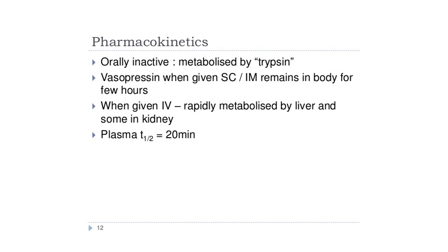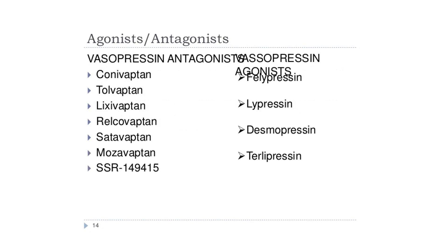Regarding pharmacokinetics: vasopressin is orally inactive and metabolized mainly by trypsin. When given subcutaneously or intramuscularly, it remains in the body for a few hours; when given intravenously, it is rapidly metabolized by the liver and kidney. The plasma half-life is about 20 minutes.